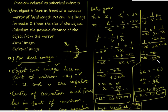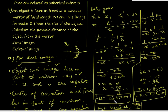This simplifies to 1 over negative 20 equals 2 over negative 3x. On cross multiplication, negative 3x equals negative 40, so the negatives cancel giving 3x equals 40, and x equals 40 by 3, which is 13.33 centimeters. Since x equals negative u, the object is 13.33 centimeters in front of the mirror. For virtual image, the object is between the focus and pole of the mirror; for real image, the object is placed beyond the focal length.